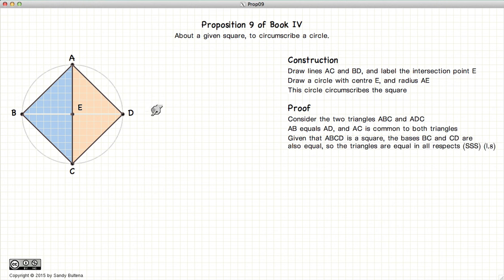According to Proposition 8, if we have two triangles with all three sides equal, the triangles are equal in all respects including the angles.